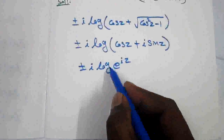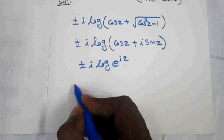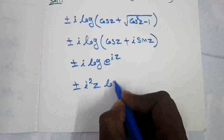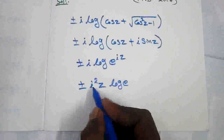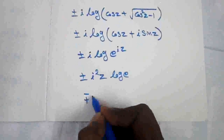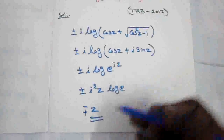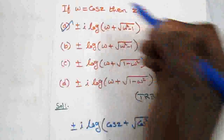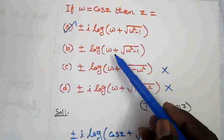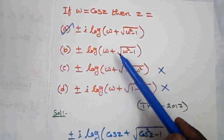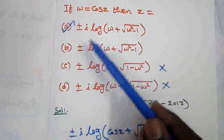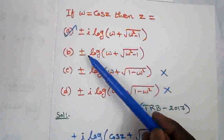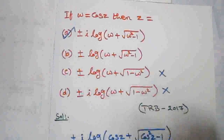Now e to the power log of e — the iz can be taken out. So this becomes plus or minus i squared z times log e. Since log e is 1, and i squared is minus 1, this gives minus times minus z, so the value is plus z. So option a is the answer. Option b cannot be the answer, because when you substitute in option b it gives the same cos z plus i sine z equal to e to the power iz, and taking iz out gives iz — but z cannot equal plus or minus iz. So only option a is the answer.